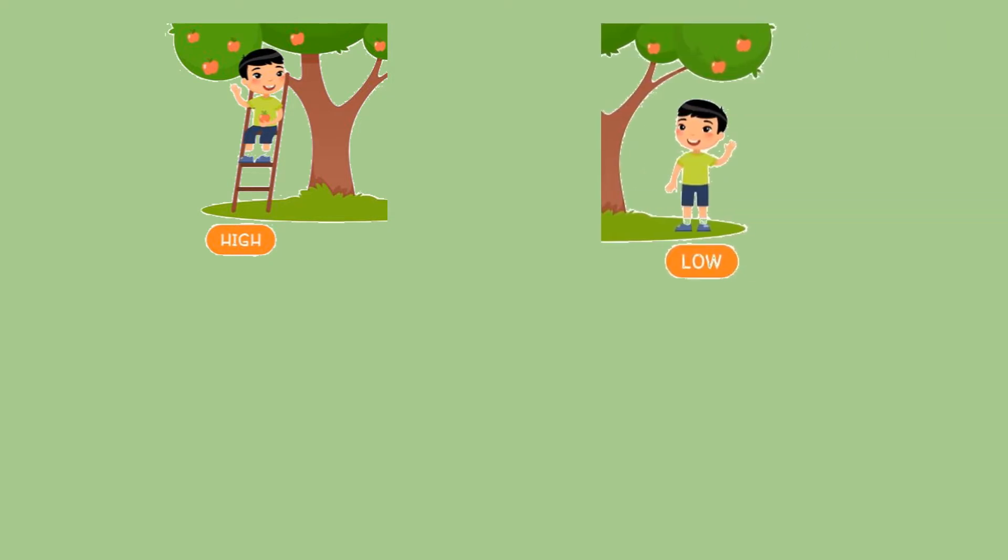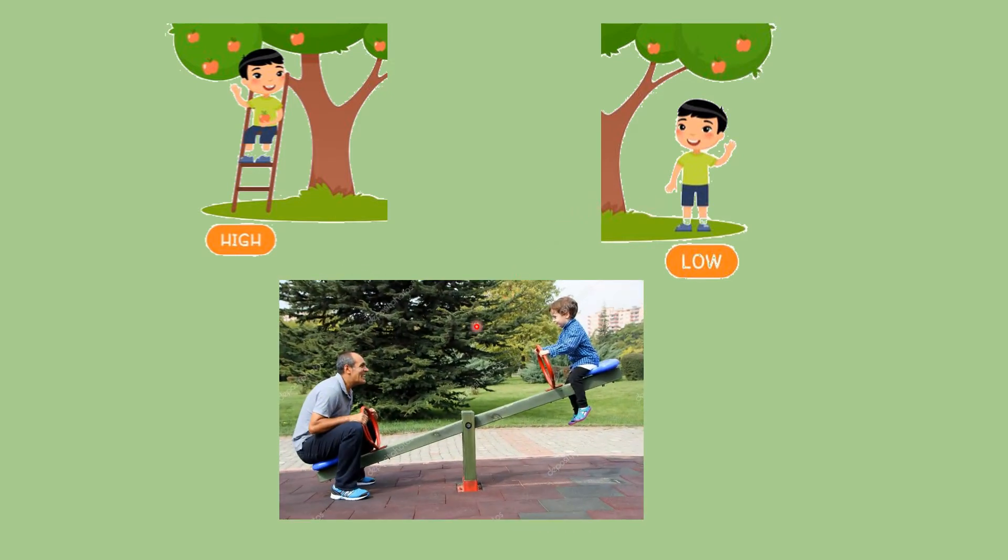High, low. This little boy is high up on the ladder and this boy is low. Look at this picture children. It is a seesaw. This man is sitting low and this little boy is high up. So the opposite of high is low.